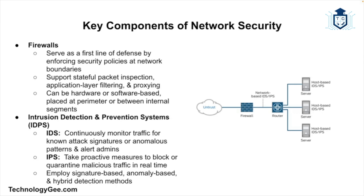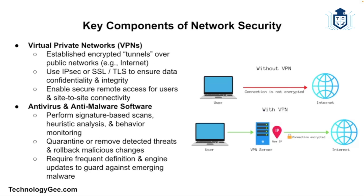You have what are called intrusion detection and prevention systems. IDS and IPS systems monitor network traffic for suspicious activities and take action to prevent potential threats. Intrusion detection systems alert administrators to potential intrusions, while intrusion prevention systems block malicious traffic.